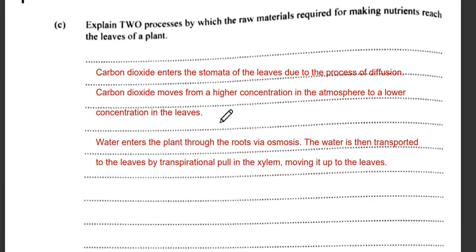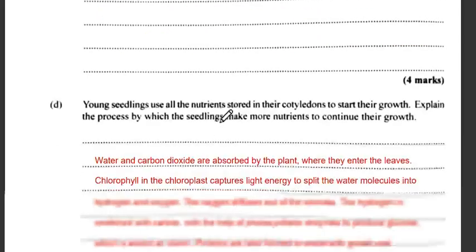The next question asks us to explain two processes by which raw materials required for making nutrition reach the leaves of a plant. Carbon dioxide enters the leaves through the process of diffusion — moving from a higher concentration in the atmosphere to a lower concentration in the leaves. Water enters the plant through the roots by osmosis and is transported to the leaves through the xylem by transpiration.